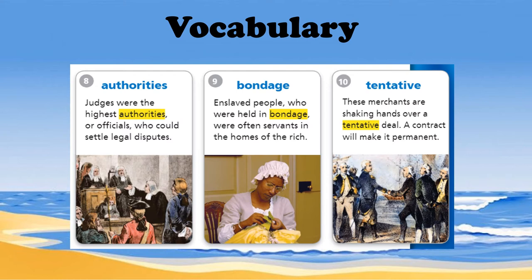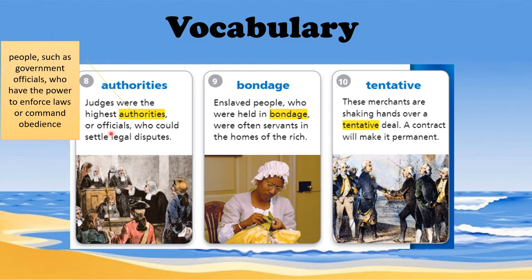Next, number eight: authorities. Judges were the highest authorities, or officials, who could settle legal disputes or conflicts of lawful matters. Authorities can also be called officials, meaning they hold the highest positions in office or in society — people such as government officials who have the power to enforce laws or command obedience from the citizens.